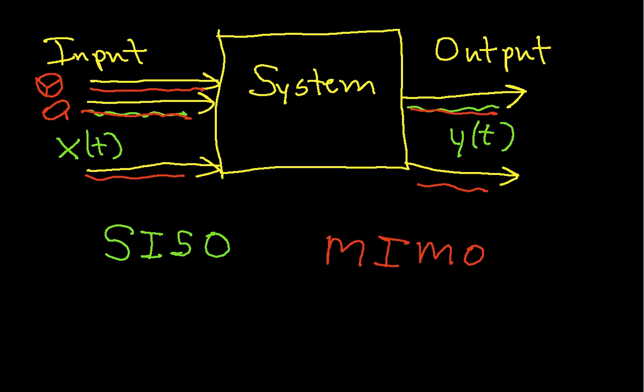The output might be the speedometer, or the speed, and maybe the direction of the car. So that would be an example of a MIMO system.